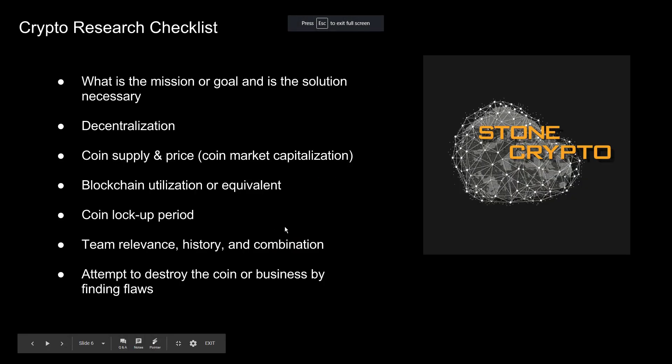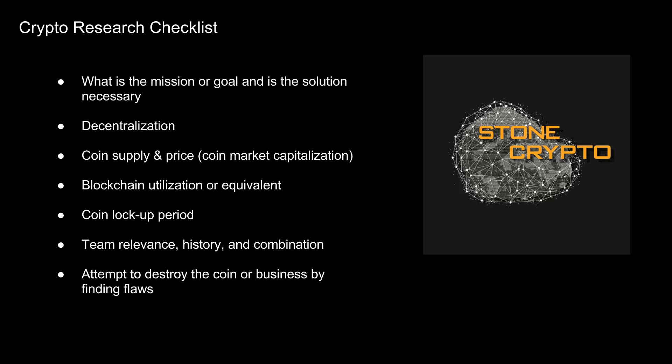Blockchain utilization — you want to make sure the coin or company actually has a reason to be on the blockchain, and that putting it on the blockchain actually disrupts the industry by decreasing cost, increasing speed, and making things significantly more efficient.